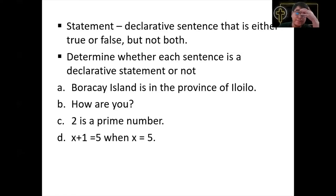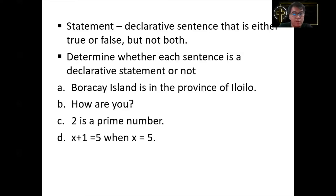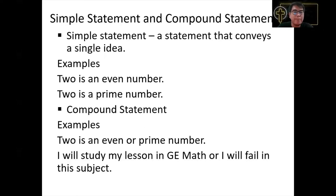Statements C and D are both declarative sentences because we can evaluate them as true or false. For instance, in statement D, 'x plus 1 is equal to 5 when x is equal to 5' is a declarative sentence — and it is false, because when x equals 5, then 5 plus 1 is not equal to 5.